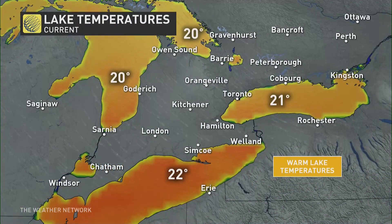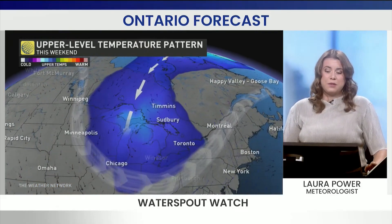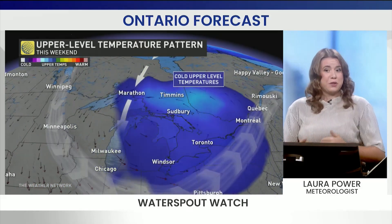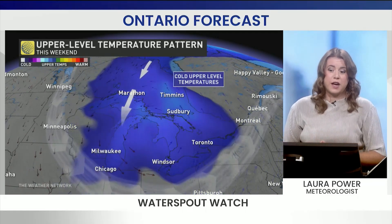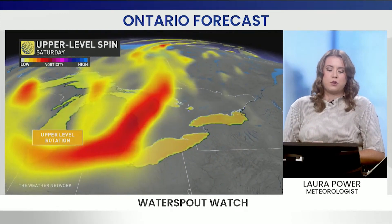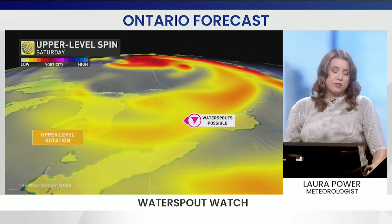Here's a look at what we're talking about. Warm lake temperatures — Lake Erie sitting at 22 degrees, Lake Ontario at 21 degrees — and then we get the upper-level temperatures descending with this low pressure system. Those are zero degree temperatures, two to five on the edges, but that core there is zero degree upper-level temperatures. So that's a very strong temperature difference in just a little bit of height. We also have the upper-level rotation or spin that could allow for these waterspouts to potentially form.